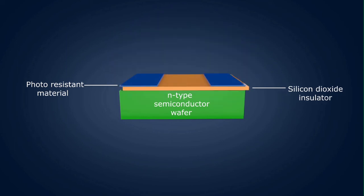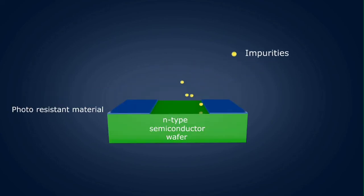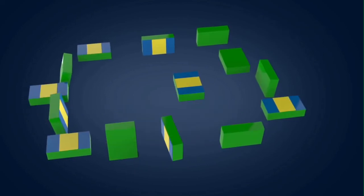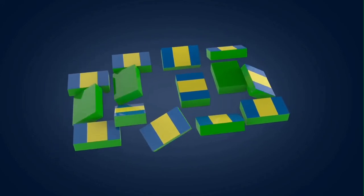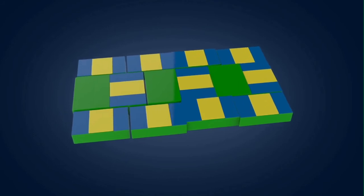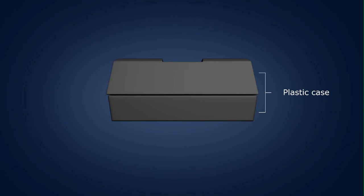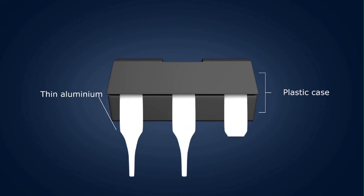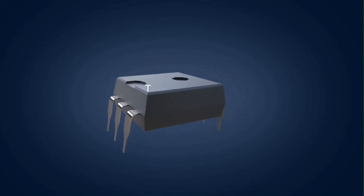Next, the silicon dioxide is removed with the help of the etching process. Lastly, the required impurities are added. This process is repeated to obtain different geometries required to complete the chip circuit design. The internal connections between components are made by passing aluminium vapour. The chip is then enclosed in a protective plastic case, and finally, with the help of thin aluminium leads, the connectors are taken out. This is how the standard package IC is manufactured.